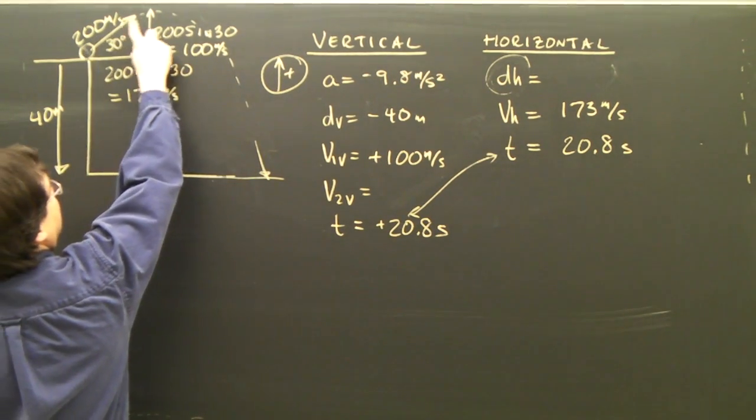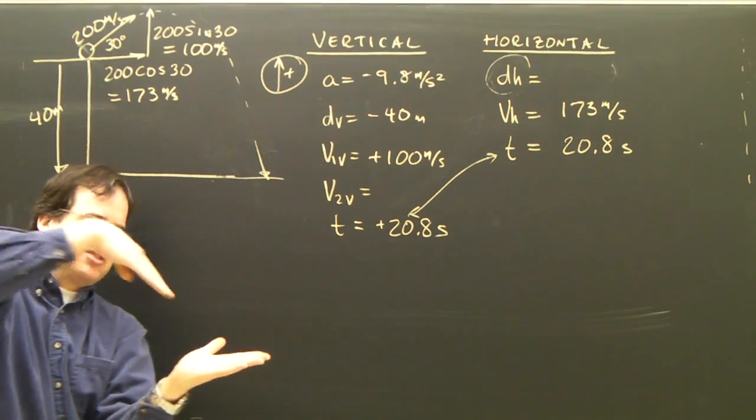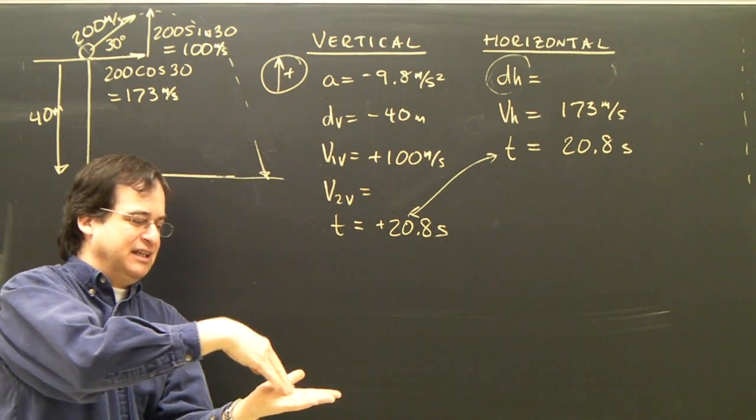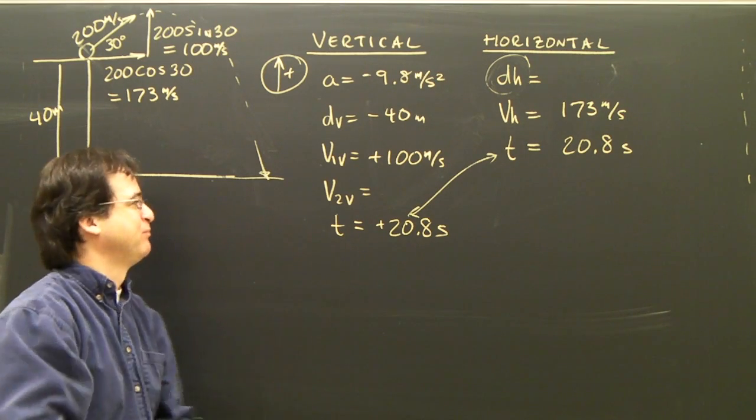The projectile goes along this path and hits the ground over here. It hits the ground at an angle, so I'm going to need an angle, and it hits at a certain velocity, and that's what I want to calculate.